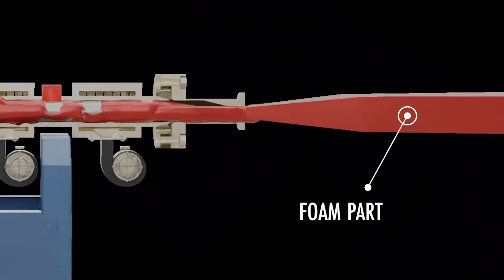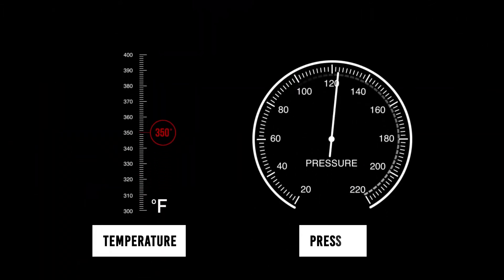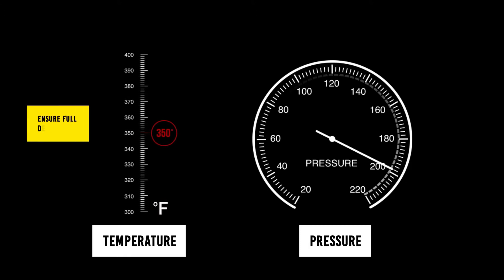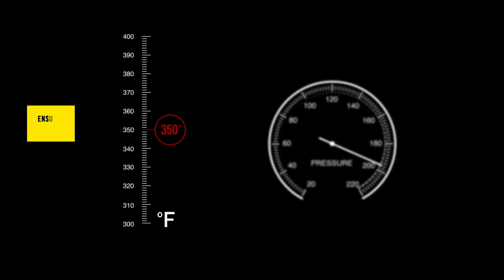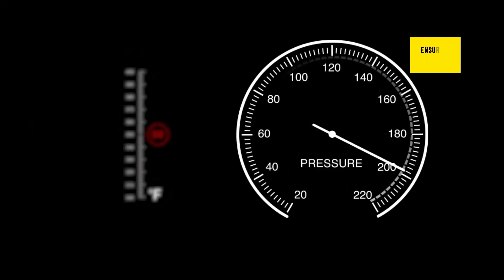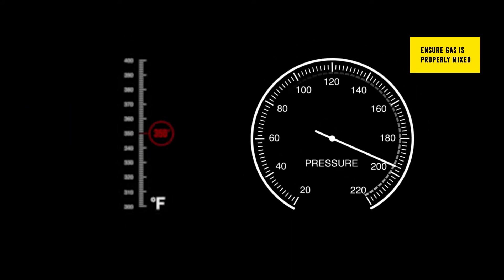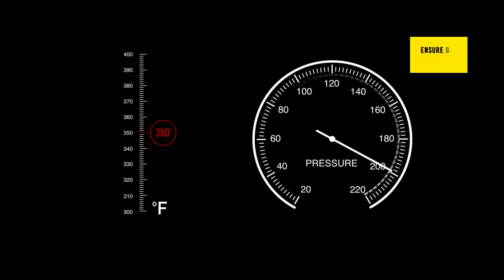As we just mentioned, the two most critical parameters in foam extrusion are temperature and pressure. You need to ensure full decomposition of our CFA by controlling the temperature. Then, ensure that the pressure is high enough to keep that gas dissolved in the melt until the material exits the die.